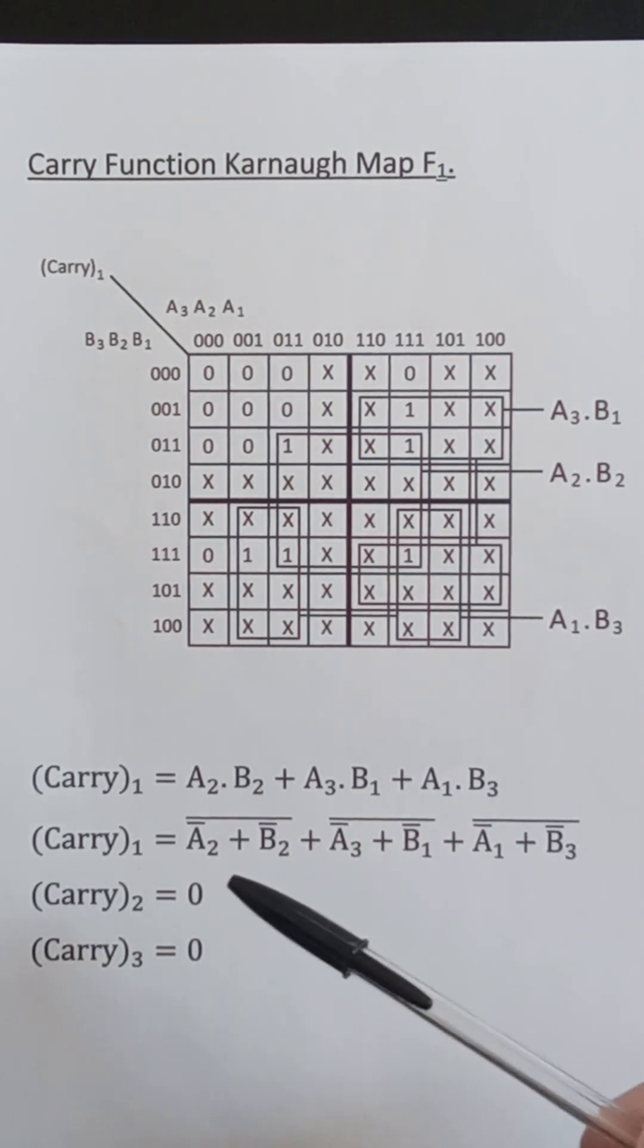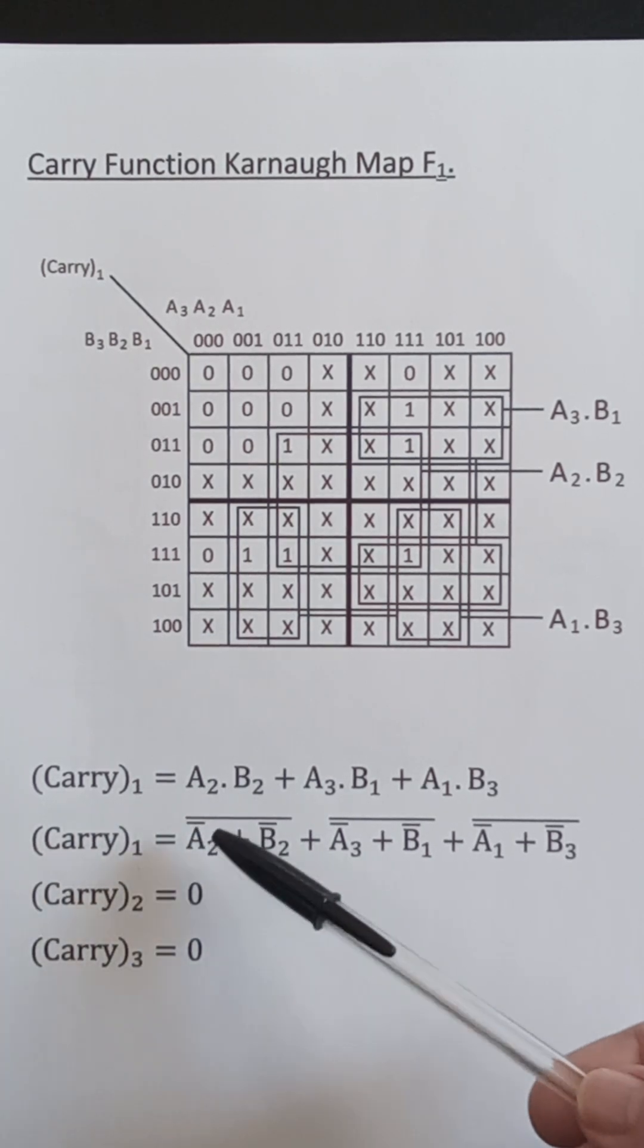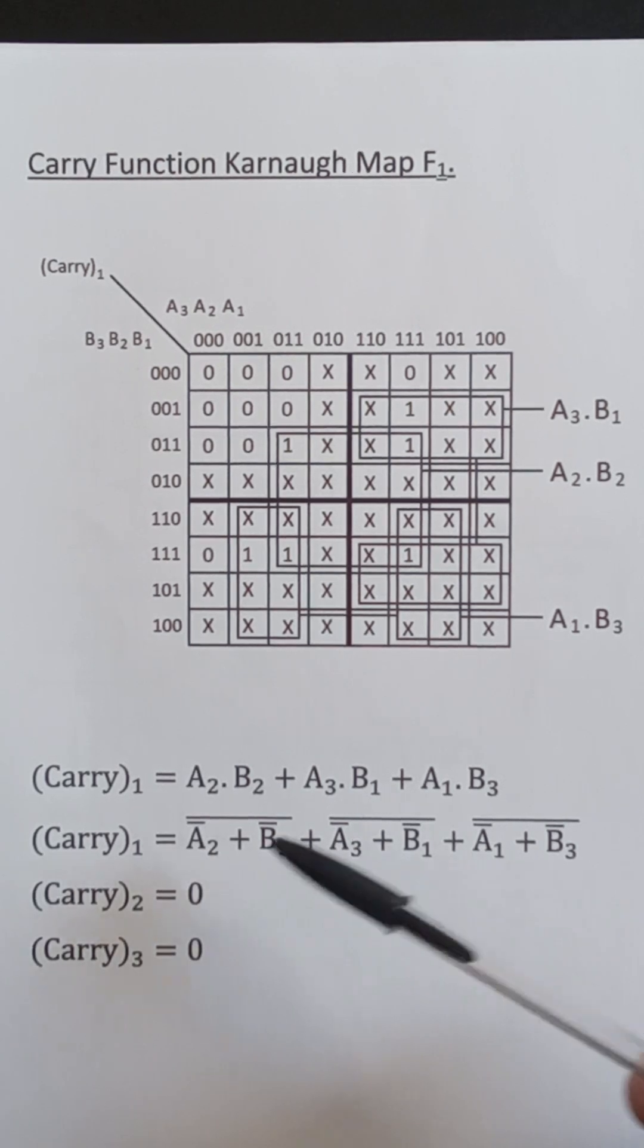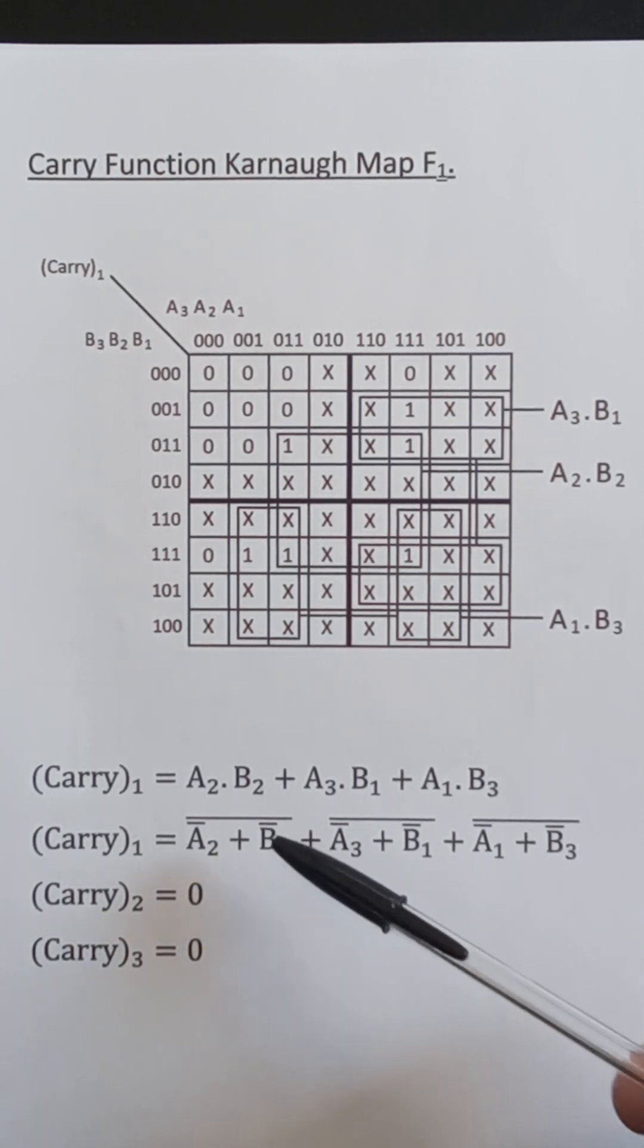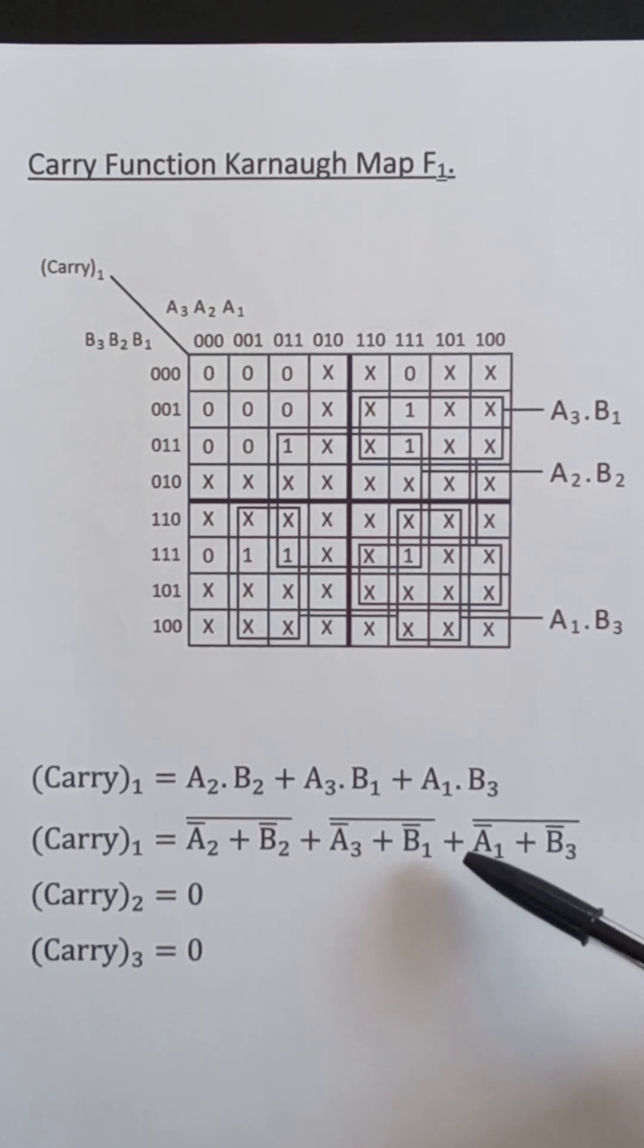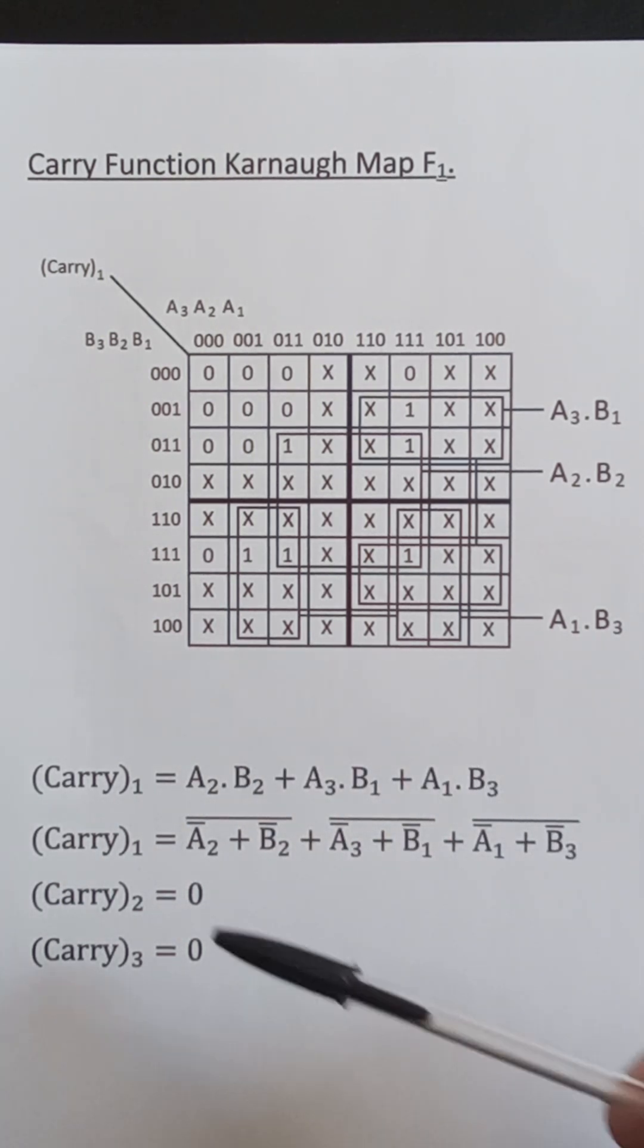I'm using De Morgan's theorem to take this AND function and make it into a NOR. So that's not A2 nor not B2 or not A3 nor not B1 or not A1 nor not B3. The reason I'm doing this is I can get away with using one inverse pair of inputs instead of 2 which I'd have to use there. And as I've said before, carry2 and carry3 equals zero.